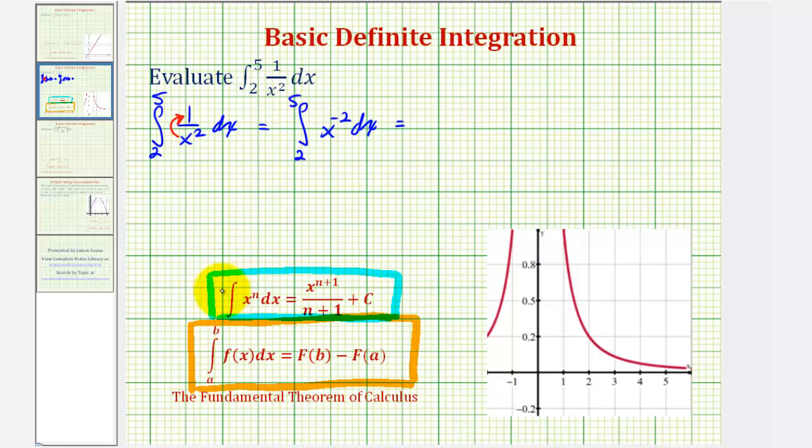And now we need to be careful when applying our integration rule. This is going to be x raised to the power of negative two plus one, that's negative one divided by negative one. And now we need to evaluate this at the upper and lower limits of integration, which are five and two.